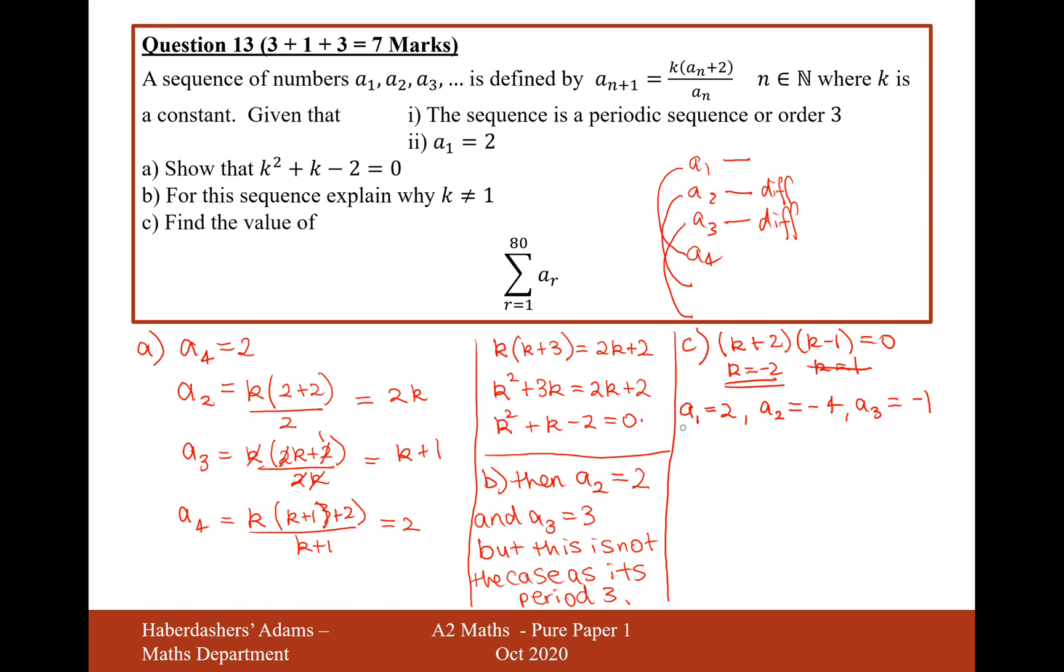So now, if I do 78 divided by 3, that gets me up to, let me just get my calculator, 78 divided by 3, that would get me up to 26. So for the summation from 1 up to 78, then 78 divided by 3, because I've got three numbers that are going to be grouped together here, that's 26. That's going to equal 26 times a1, a2, and a3. So that's going to be 2 minus 4 is -2, minus 3, that's -3. So 26 times -3 is -78.